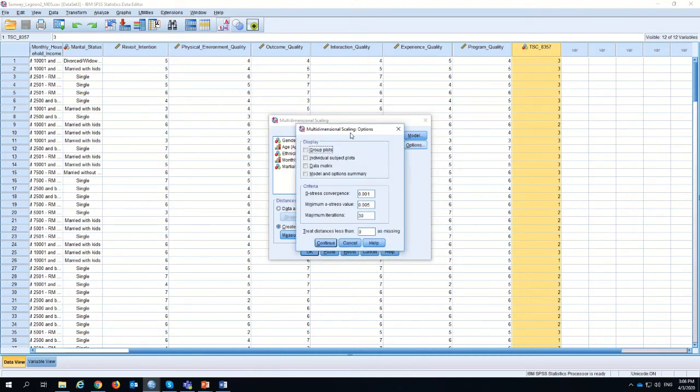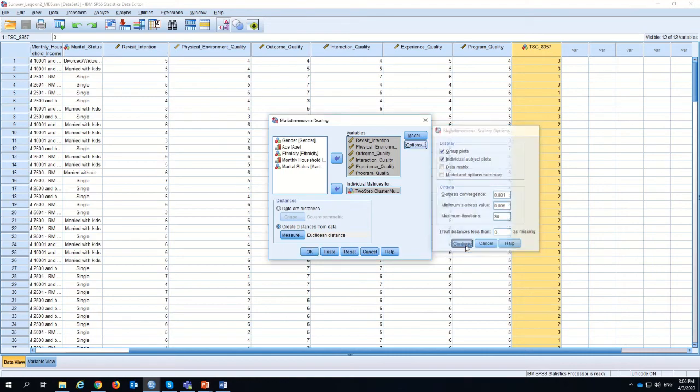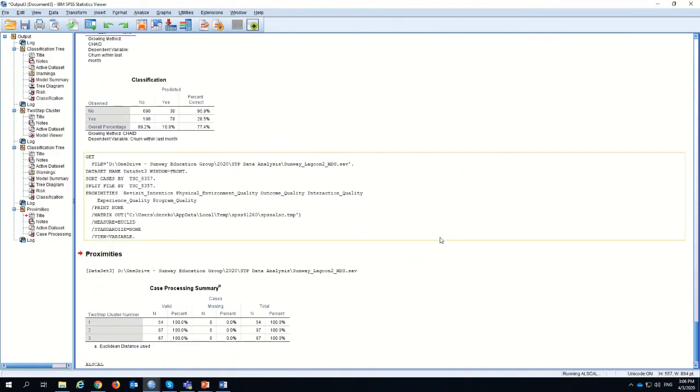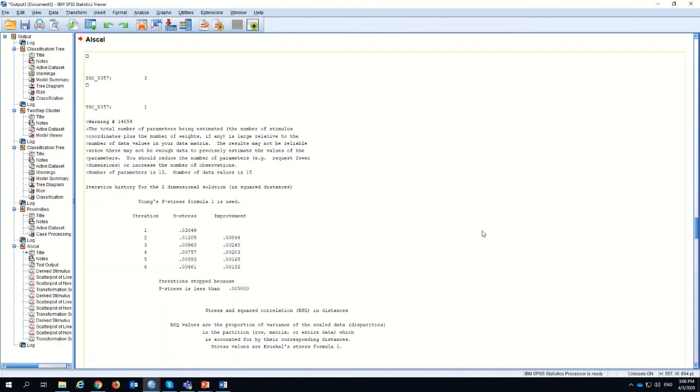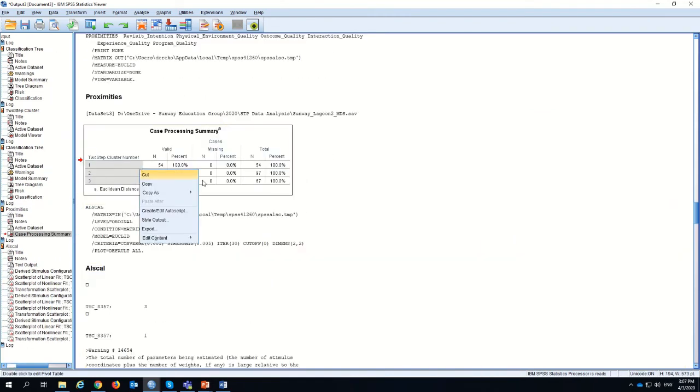Under the options, I can have a difference between group plots, but I can also have a distance between individual subplots. It depends on what you want. Sometimes you can have group plots or individual plots, but we can see the two and see the differences. As you can see, my dataset shows I have the number of people: 54 for cluster 1, 97 for cluster 2, and 67 for cluster 3.